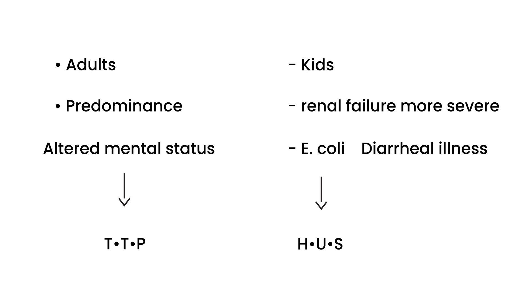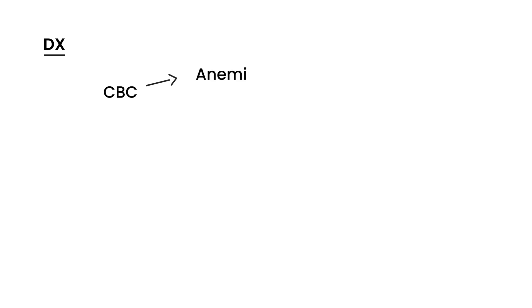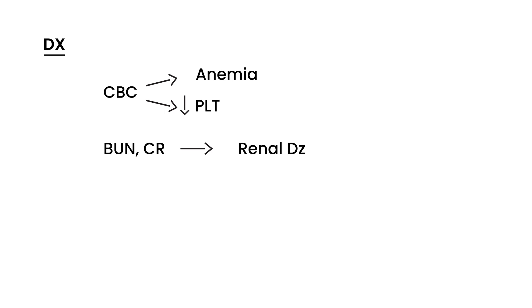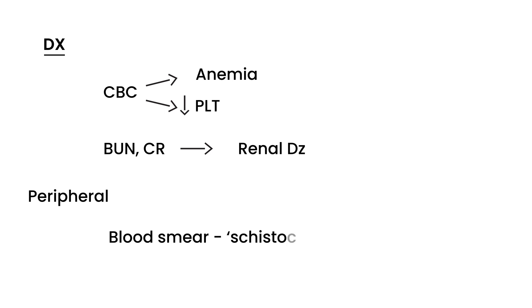Because the classic pentad is the same in both conditions, diagnosis relies on several tests. A CBC detects the anemia and low platelet count, and BUN and creatinine give an indication of renal involvement. One very important test that provides a strong clue is the peripheral blood smear, which shows schistocytes — schistocytosis on a peripheral blood smear is a very strong indicator of TTP.